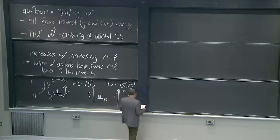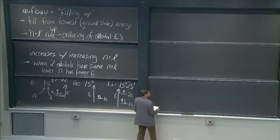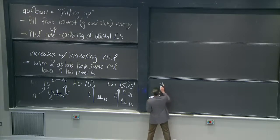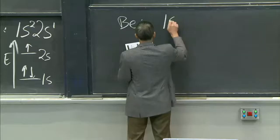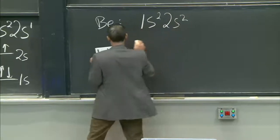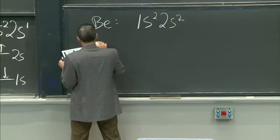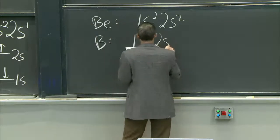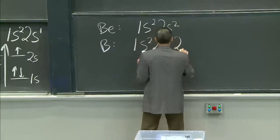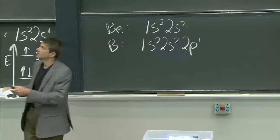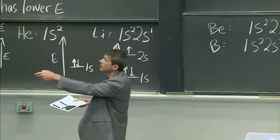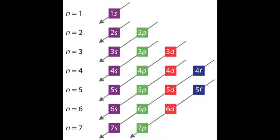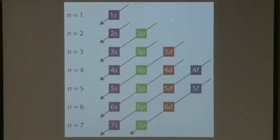Beryllium would be 1s²2s², and boron would be 1s²2s²2p¹. I'm really following Aufbau now — I went this way, then that way, then up here and started on this arrow, which is just a graphical way of showing those rules.